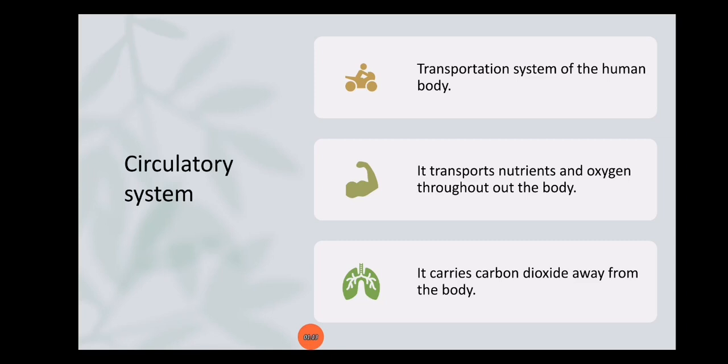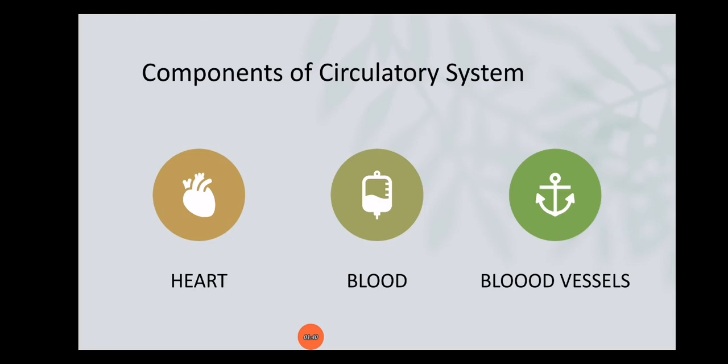The circulatory system works the same as a train. A train transports goods and people from one place to another. Just like a train — which has parts including the train itself, the railway station, and the train tracks — the circulatory system transports nutrients and oxygen throughout our body and carries carbon dioxide away from our body.